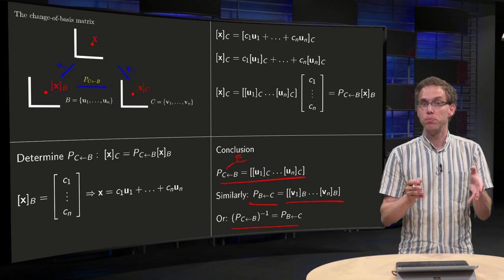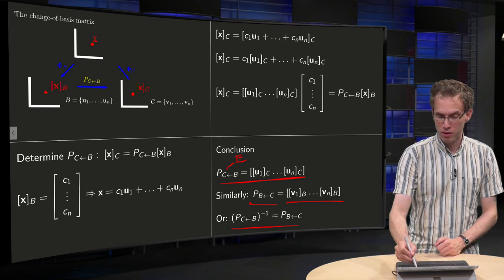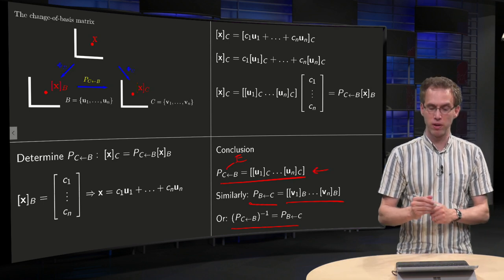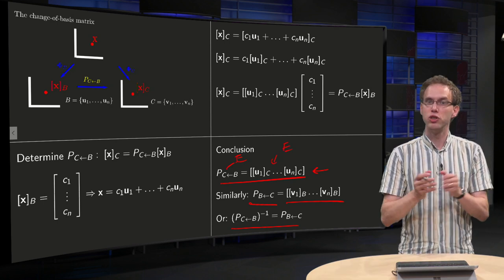So if you have a P_B, then over here you should get the P_B as well. Well, if you replace the C by an E, you get u_1 in E, which is just u_1.